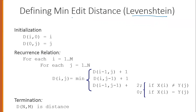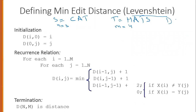For example, we take one word: 'cat', which is our source word, and the target word is 'hats'. This means that n equals 3 and m equals 4. I have to compute the cost, which is D[m,n]. This indicates that I have to build a matrix of size n+1 by m+1, which is a 4 by 5 matrix.